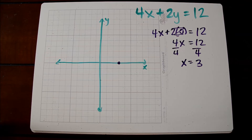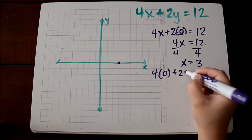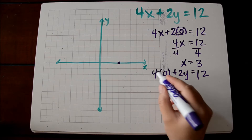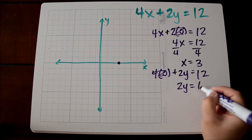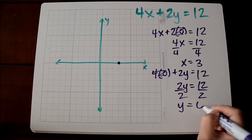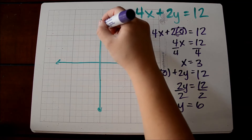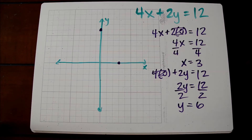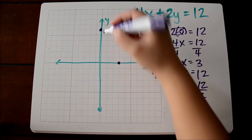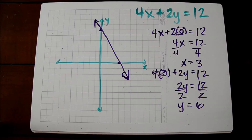Then we're going to do the opposite to find the y-intercept. We substitute 0 in for x, and we get 4 times 0 plus 2y equals 12. Anything times 0 is 0, so we're left with 2y is equal to 12. When we divide both sides by 2, we get y is equal to 6. So we have a y-intercept at (0, 6) because our x-value is 0. Using these two intercepts, we connect them with a line, and that is how we graph this equation written in standard form.